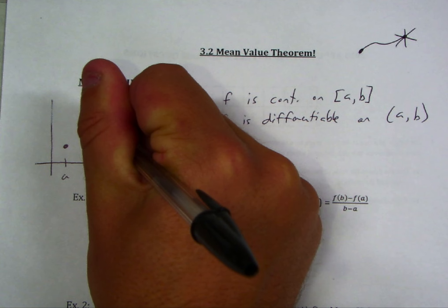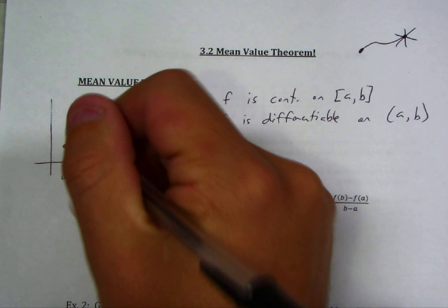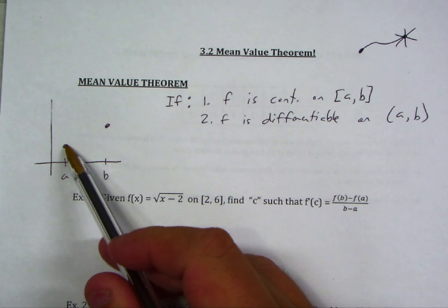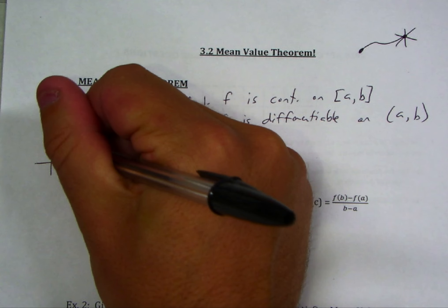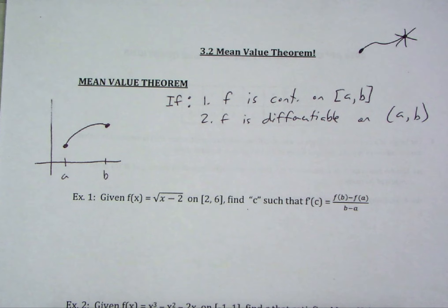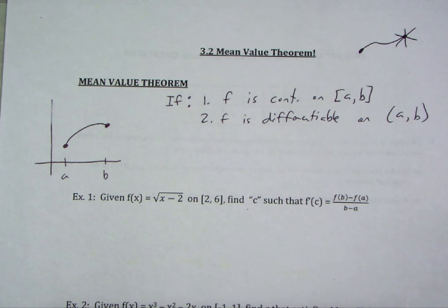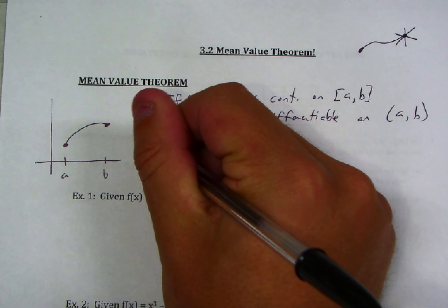I'm going to draw some function that's just nice and smooth. You could straight up just connect from A to B, but I'm going to draw a nice differentiable function. So if you have these two conditions — continuous and differentiable — then here's what's true.